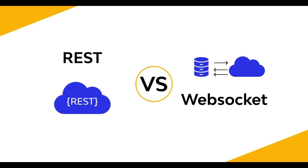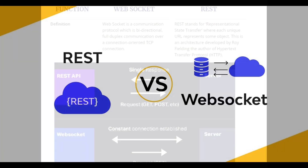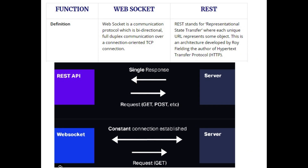REST API and WebSocket API are two different communication protocols used for building APIs, and they serve distinct purposes in the context of web development. WebSocket is a communication protocol that enables bi-directional and full-duplex communication over a connection-oriented TCP connection, meaning that both the client and server can send messages to each other independently, allowing for real-time, low-latency communication.